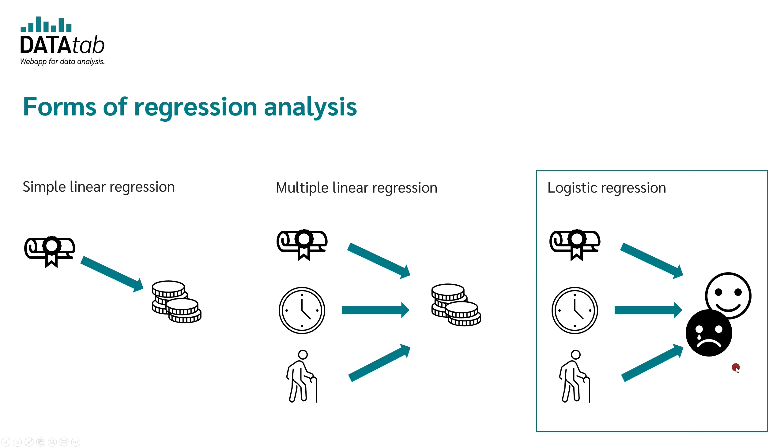So an example could be that you want to predict if an employee has a risk of getting a burnout or not. So your dependent variable would be burnout risk yes or no. In order to predict your dependent variable burnout risk you could use the educational attainment of the person, the weekly working hours and the age of the employee.